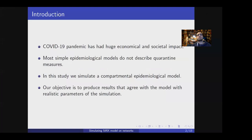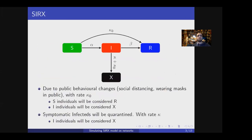As we all know, COVID-19 has huge impact on economy and society. It is reasonable that a lot of researchers have been focused on epidemiology. In this study, we will simulate an epidemiological model inspired by Dick Brockmann. This model takes into consideration the impact of quarantine measures. The model is named SIRX and divides the population into four states: S the susceptible, I the infected, R the recovered, and X the quarantined individuals.